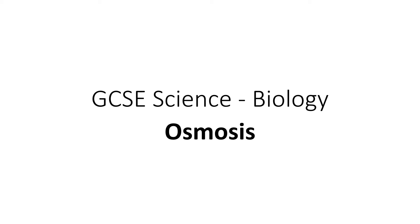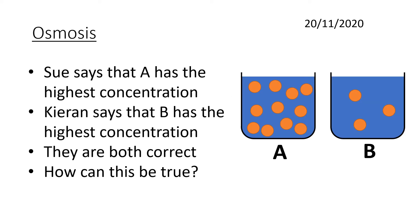In this presentation, we're going to be looking at GCSE Science or GCSE Biology on the process of osmosis. Two students are claiming that two different containers both have the highest concentration, and the statement says that they're both correct. So have a little think to yourself: how can they both be correct when they say they both have the highest concentration?